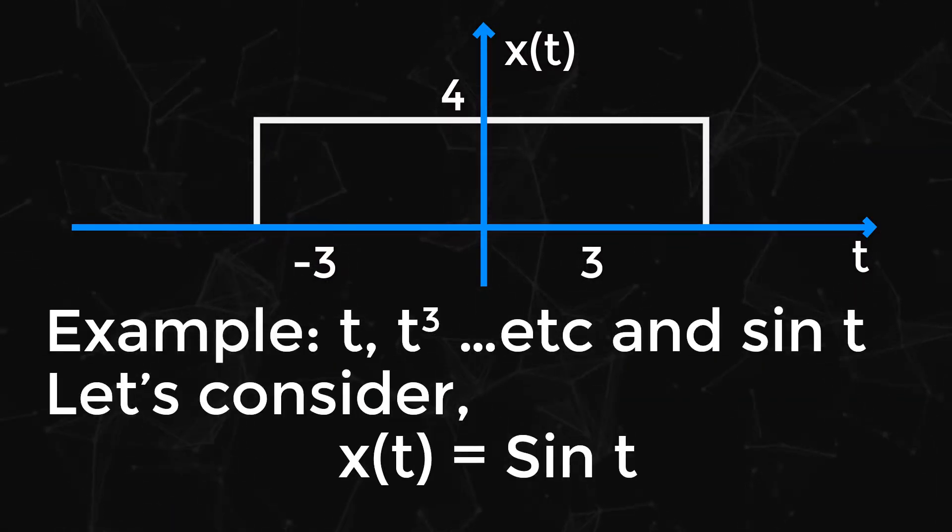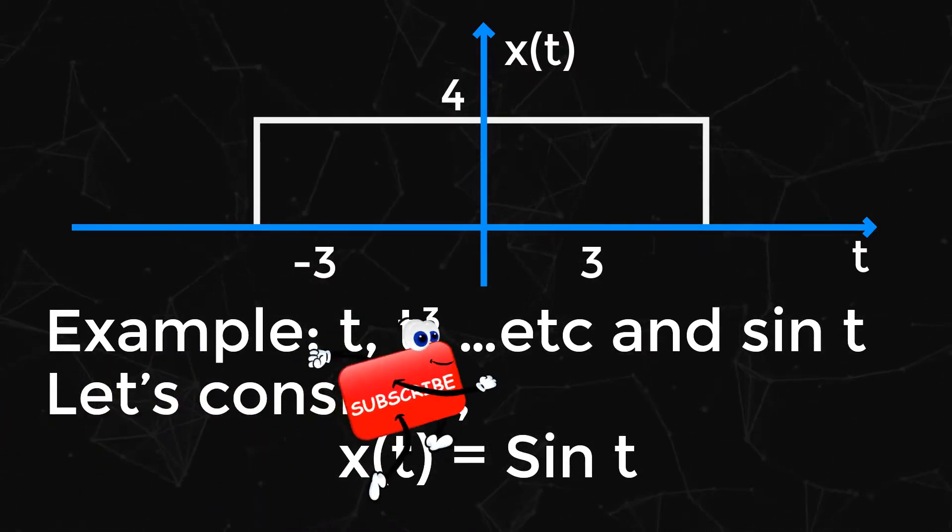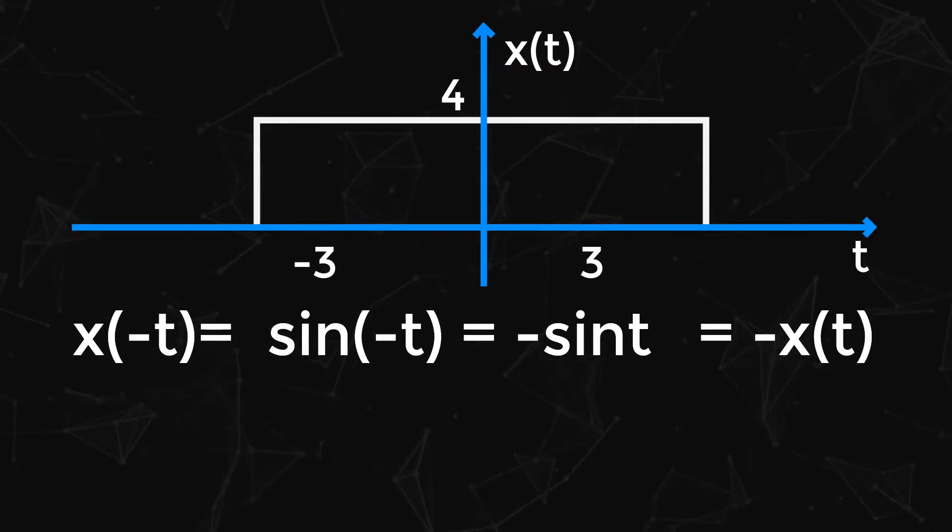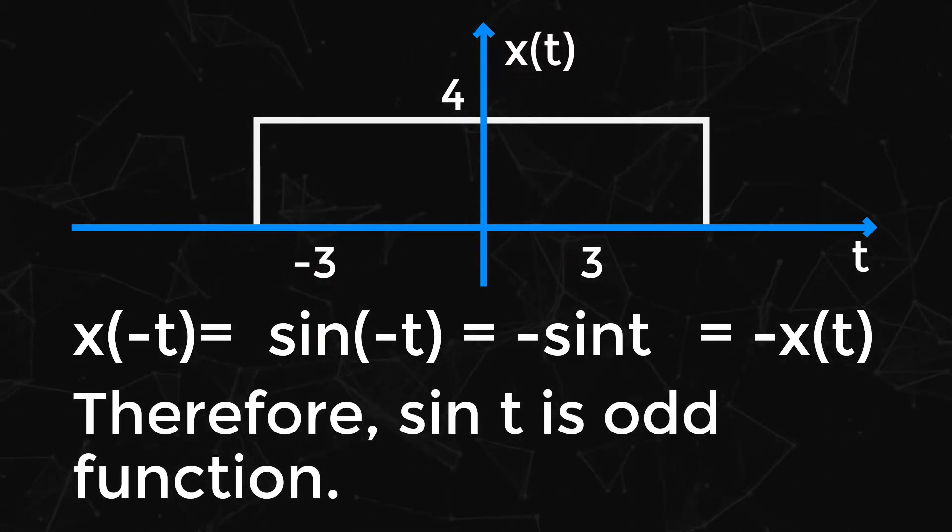Example: t, t³, and so on, and sin t. Let's consider x(t) = sin t. x(-t) = sin(-t) = -sin t = -x(t). Therefore, sin t is an odd function.